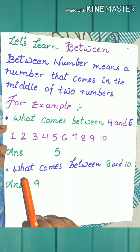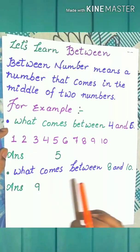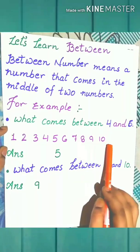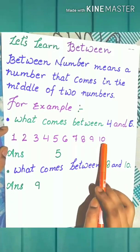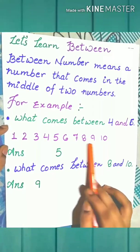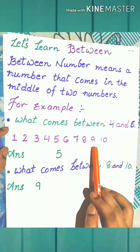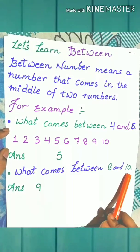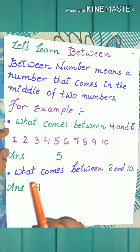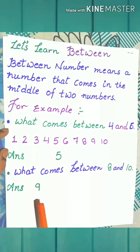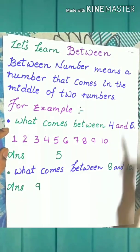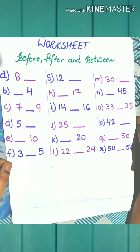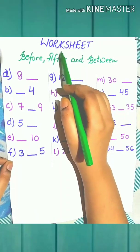Now another example. What comes between 8 and 10? 9. Yes, good. Now let's understand the topic with the help of a worksheet.